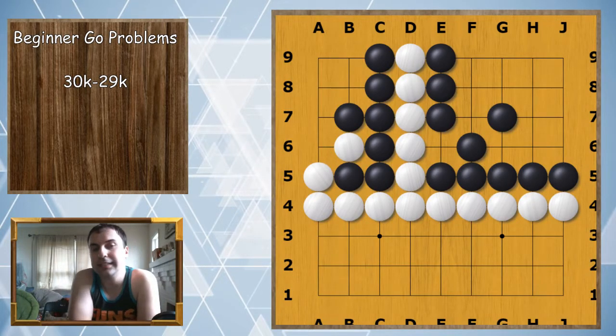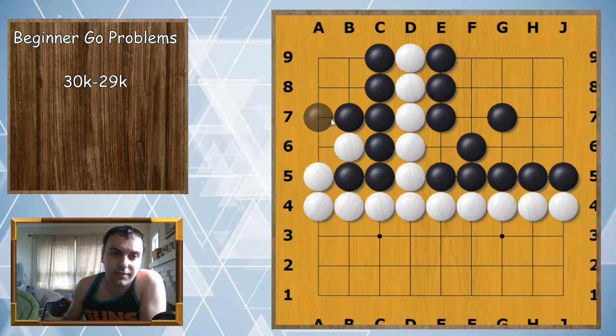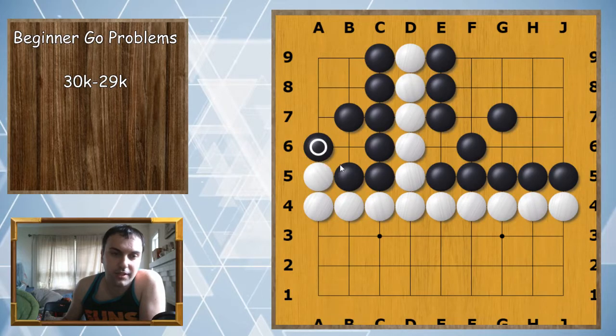Black to finish the territory. On this one many beginners might think that I need to finish the territory here, but actually it is here because you can capture a stone. So it still blocks White from coming in, but it also captures a stone, so this is the better move.